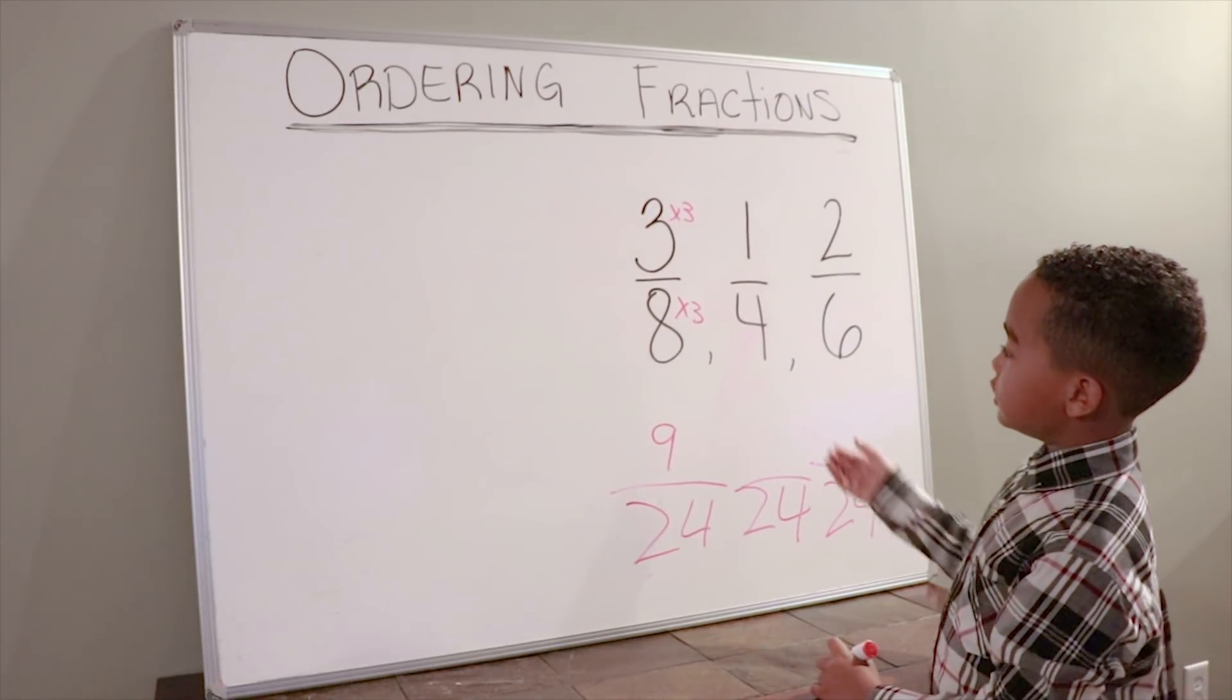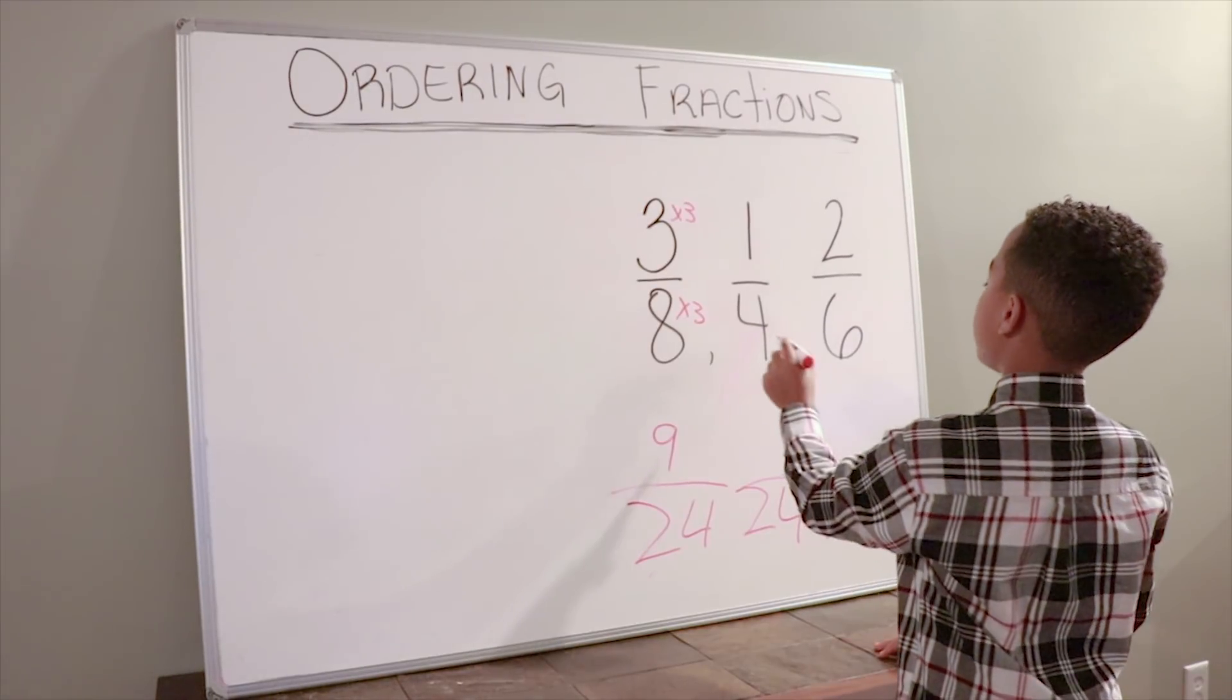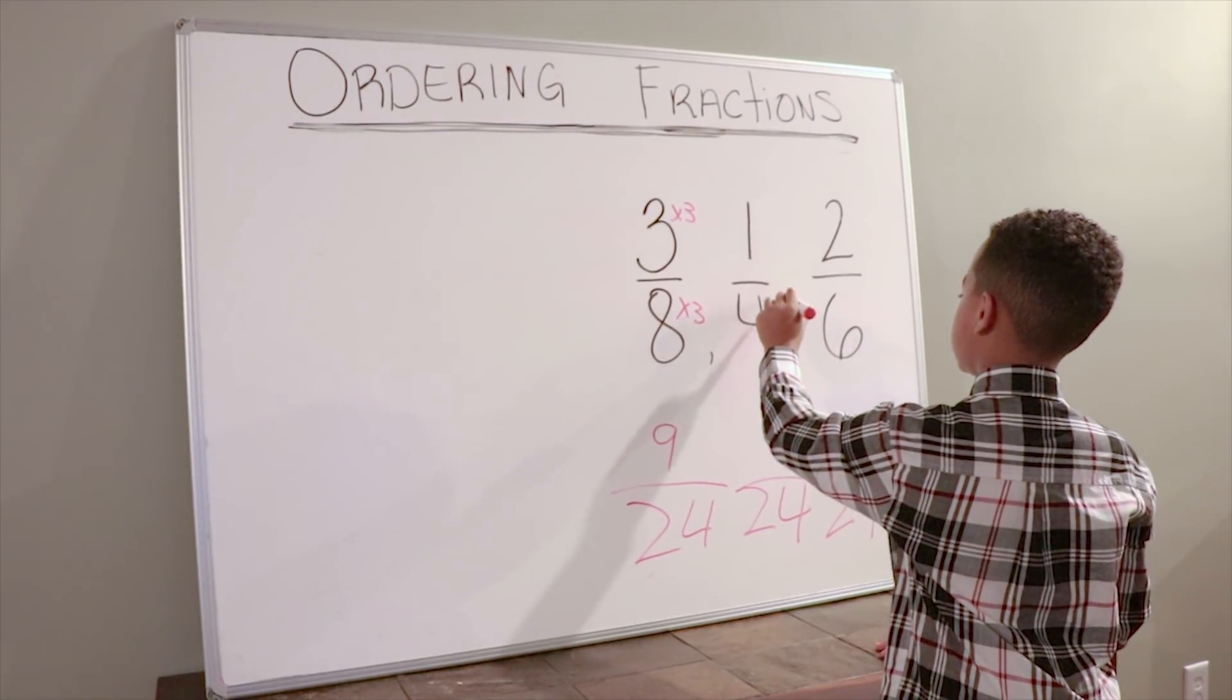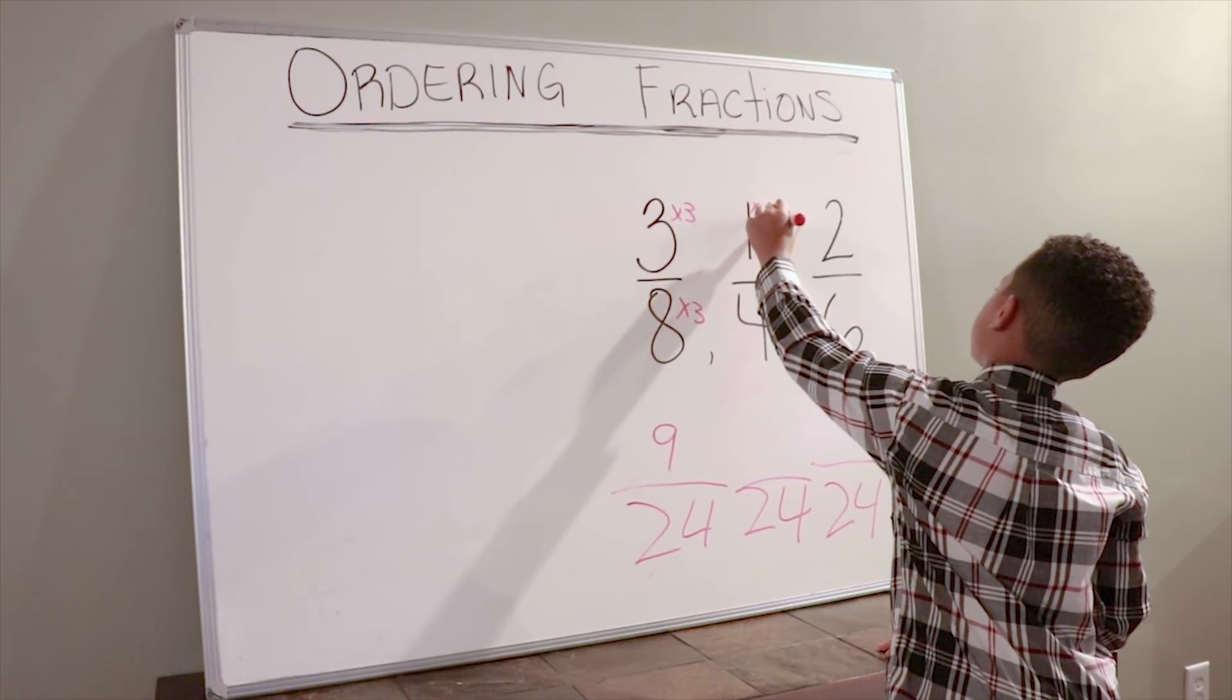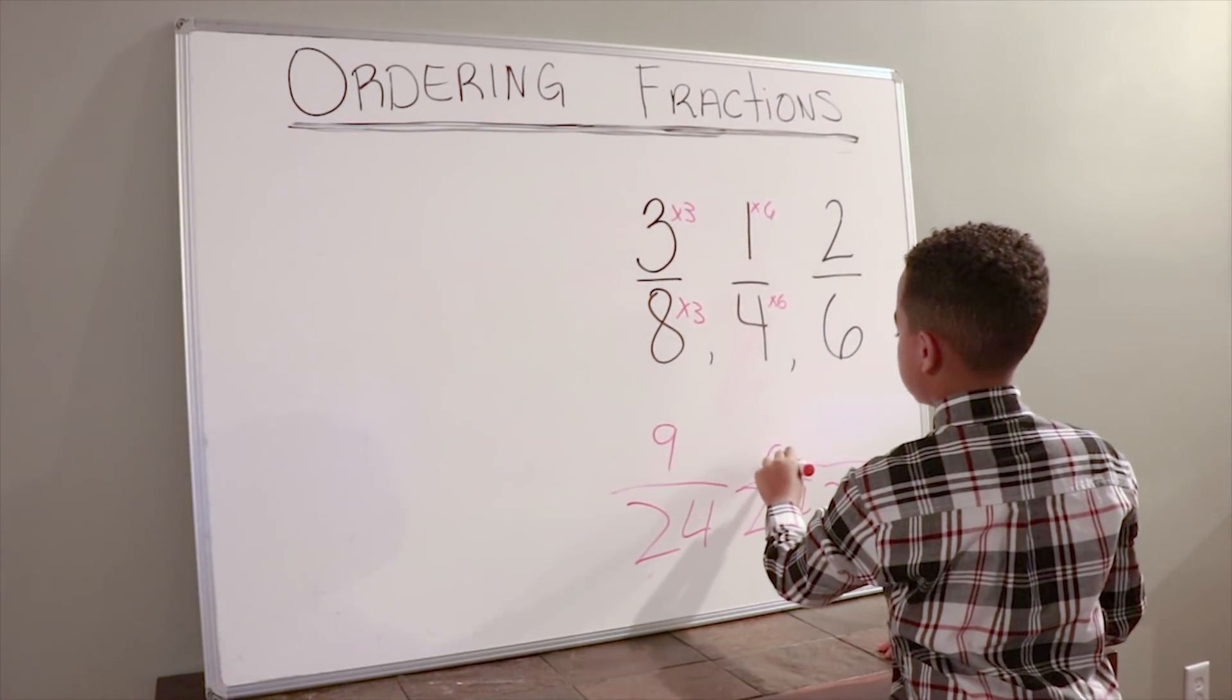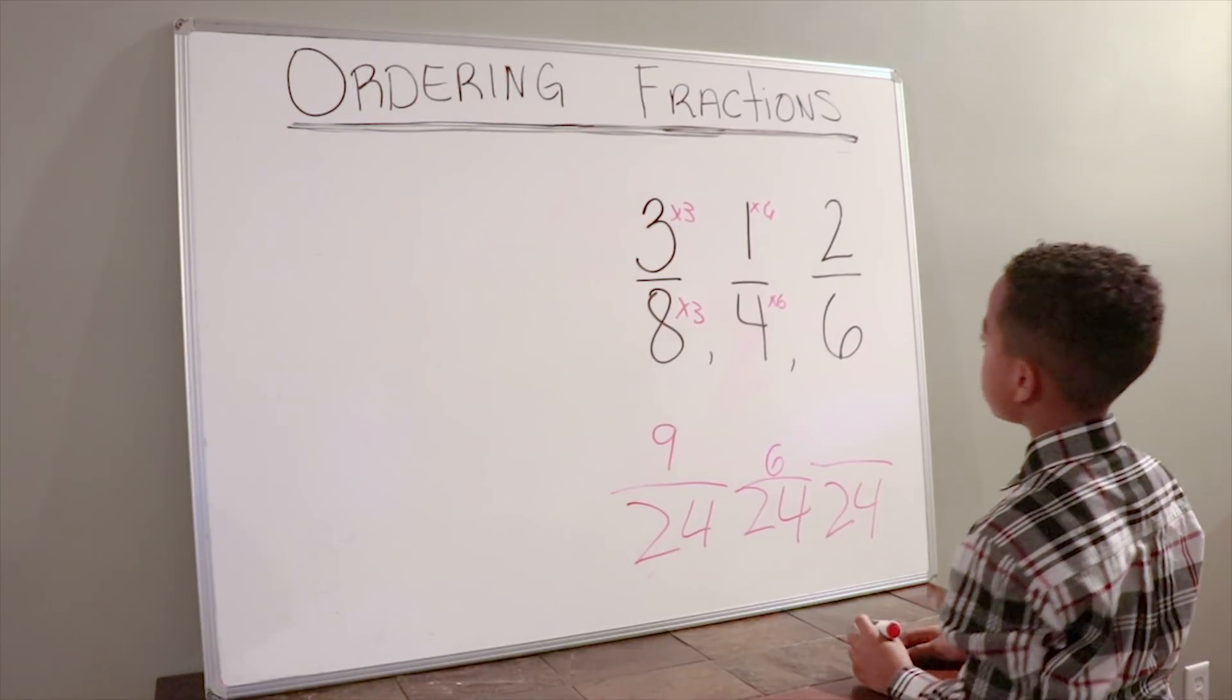Now we're going to do 1 fourth. We times 4 by 6 to get 24. 1 times 6 equals 6. We're going to write 6 as the numerator of this fraction.